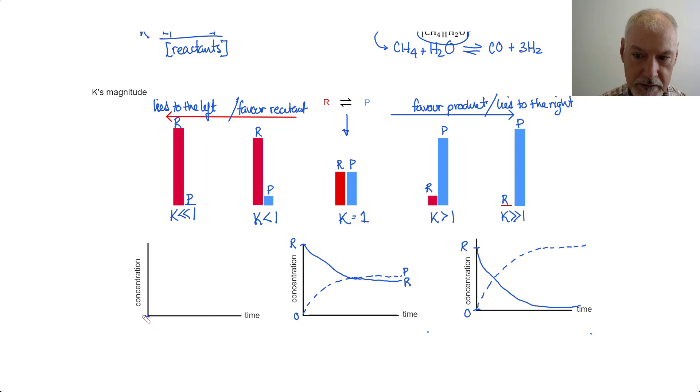Graphically, it would look the following. I start again with no product, but I would make only a little. And my reactant would hardly be consumed at all. So, the magnitude of the equilibrium constants gives us some idea of the relative amounts of products versus reactants.